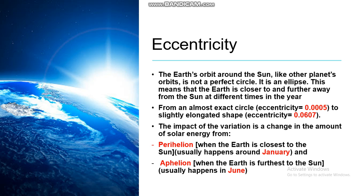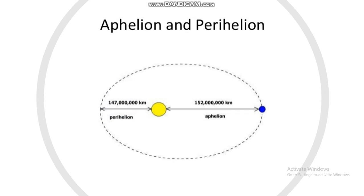The impact of eccentricity is a change in the amount of solar energy received. Perihelion is when the earth is closest to the sun, usually around January, while Aphelion is when the earth is farthest from the sun, usually in June. Aphelion is approximately 152 million kilometers from the sun, while Perihelion is approximately 147 million kilometers from the sun.